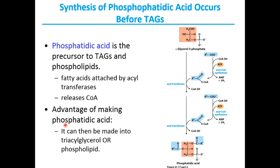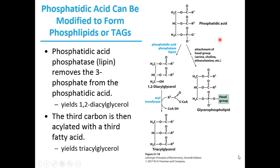Phosphatidic acid is only present in trace amounts in cells but is a central intermediate in lipid biosynthesis. Its advantage is that it can then be converted to triacylglycerol or a phospholipid. The action of phosphatidic acid phosphatase converts phosphatidic acid to 1,2-diacylglycerol by removing a phosphate group. Acyltransferase then transfers an acyl group to the free hydroxyl group of 1,2-diacylglycerol to form a triacylglycerol molecule. Phosphatidic acid can also be converted to glycerophospholipid by the attachment of head groups such as serine, choline, or ethanolamine.